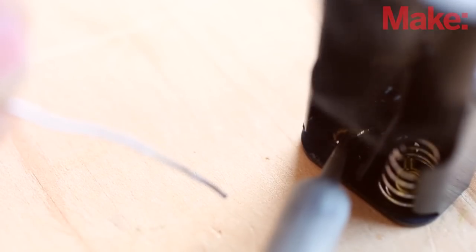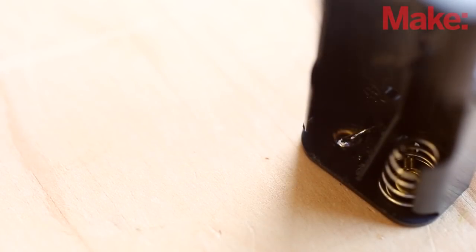Cut, strip, and solder the black lead to the battery clip terminal where you just removed the red lead earlier. This connects the two battery holders in series.